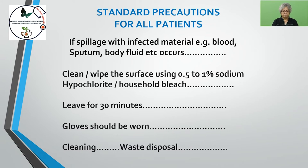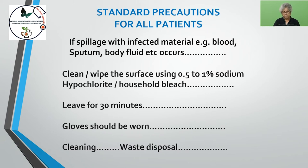If spillage with infected material such as blood, sputum, or body fluid occurs, first clean and wipe the surface using 0.5 to 1 percent sodium hypochlorite or household bleach. Spread this bleach on the spillage and around it, leave it for 30 minutes, then wear gloves and clean and dispose of the waste generated.